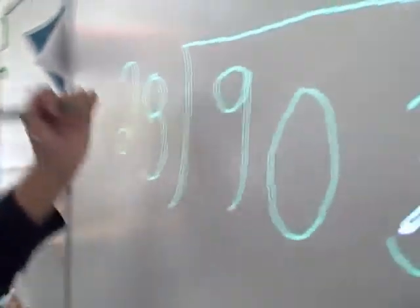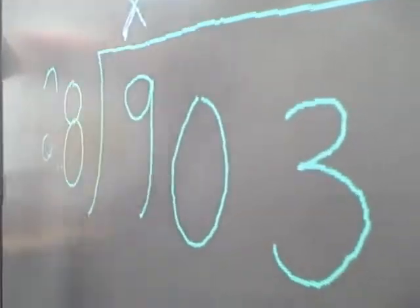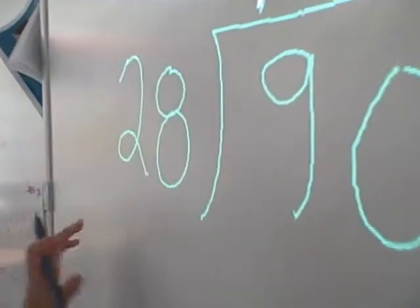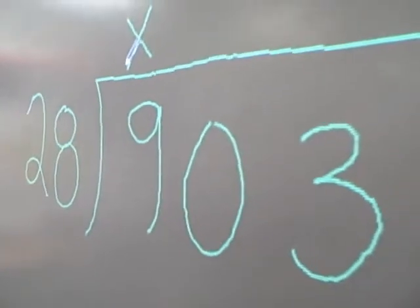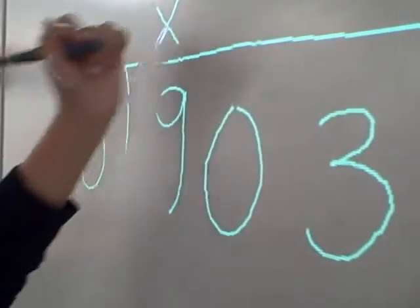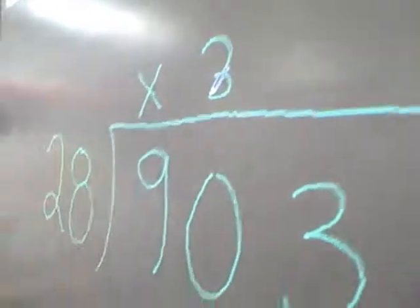Well, first I really said if 28 goes into 9, which it doesn't, so I put an X on top. And 28 goes into 90 like about three times, so I put a 3.